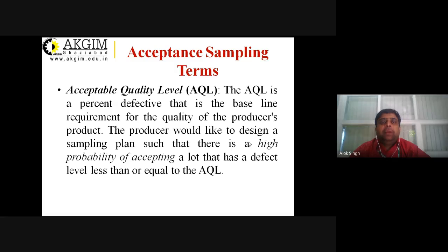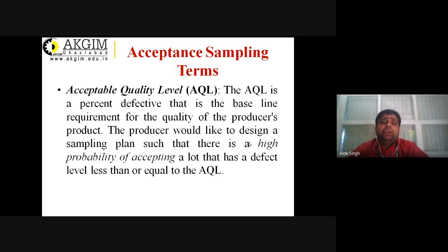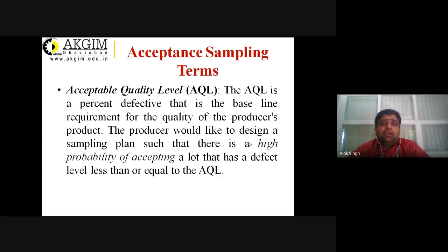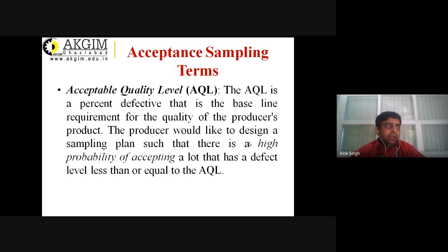We are going to discuss the acceptance sampling terms. The Acceptable Quality Level, or AQL, is the quality level of a good lot. The AQL is a percentage defective that is the baseline requirement for the quality of a producer's product. The producer would like to design a sampling plan such that there is a high probability of accepting a lot that has a defect level less than or equal to the AQL.